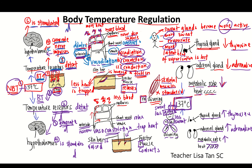How do we maintain body temperature at 37 degrees Celsius? The answer is the negative feedback mechanism. We maintain 37 degrees Celsius because most physiological processes in our body function optimally at this temperature. The enzyme-catalyzed reactions also function best at 37 degrees Celsius. That's all for today. Thank you for watching.